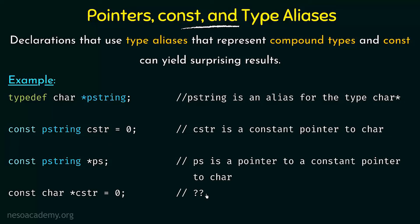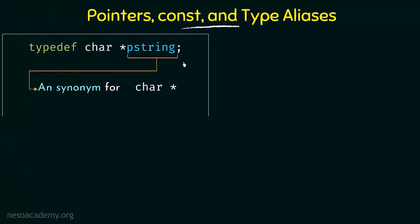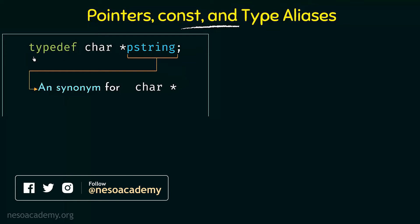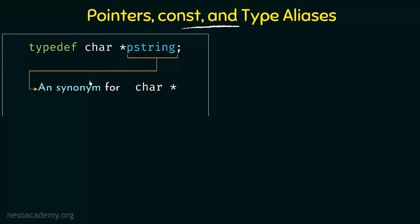Let me break them down one by one. The first declaration uses the typedef keyword, which we discussed in the previous lecture, to create a type alias. It says: typedef char* pstring. This means pstring is going to be a synonym for char* (char asterisk).